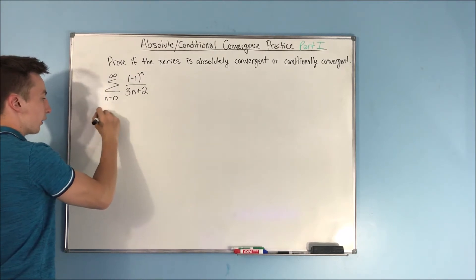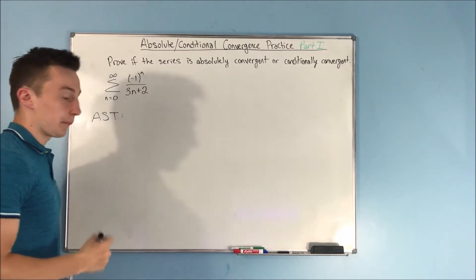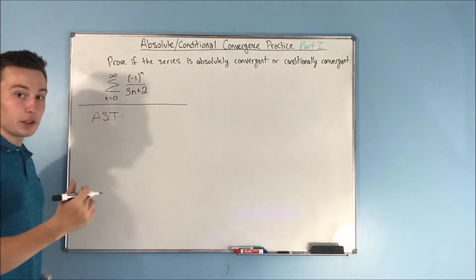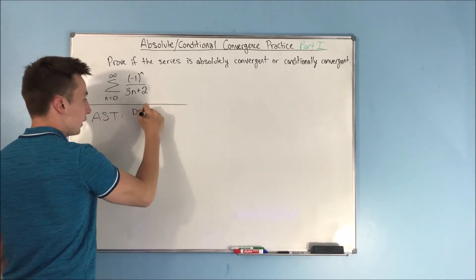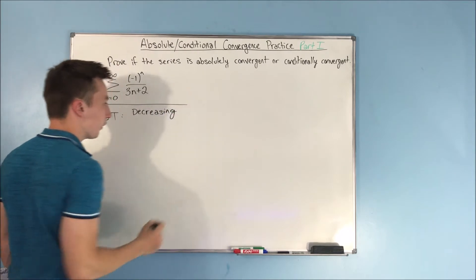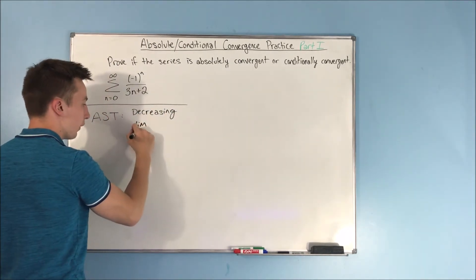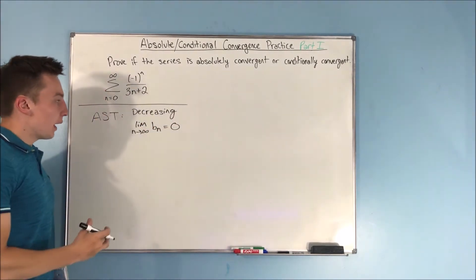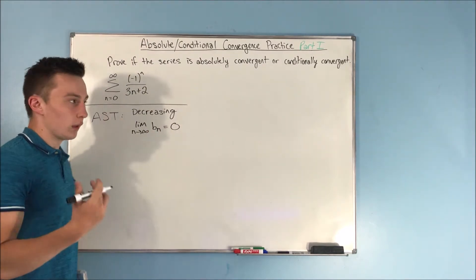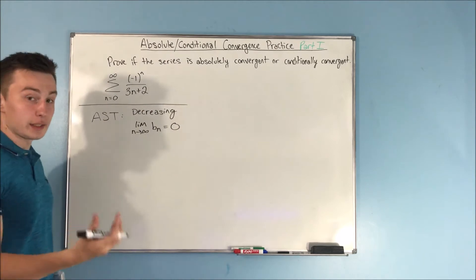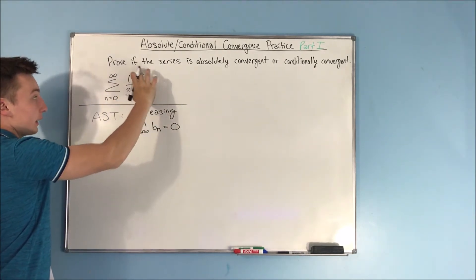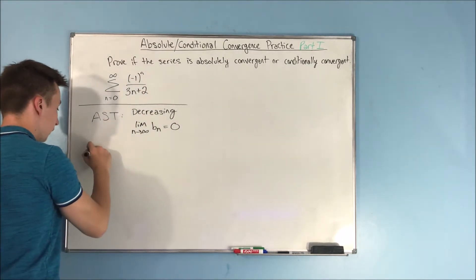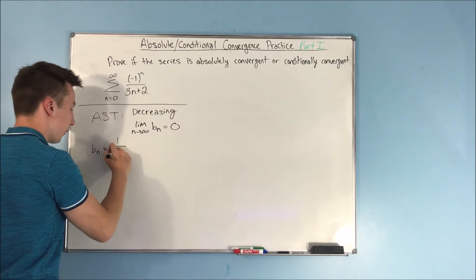We can prove if this is convergent or divergent using the alternating series test. The two conditions that need to be met are: the series is decreasing for all n, and the limit as n approaches infinity of b sub n equals zero. The b sub n is just the series without what is making it alternating — we take out the negative one to the n — so b sub n becomes one over three n plus two.